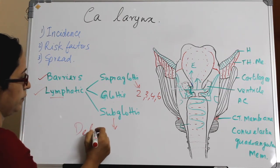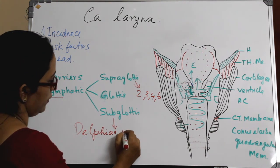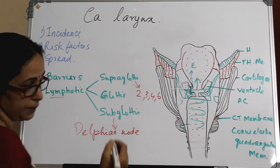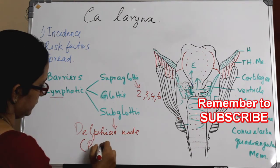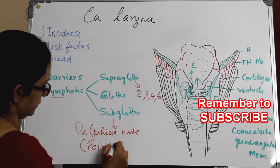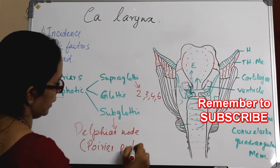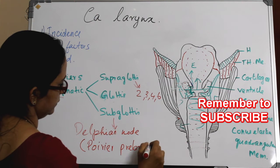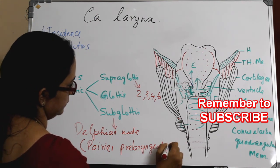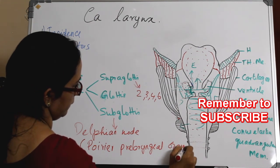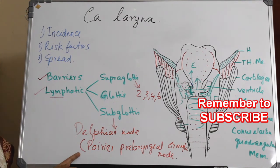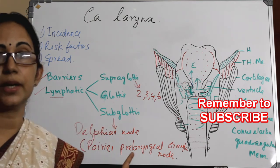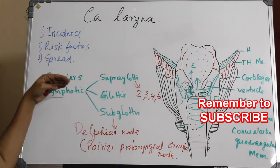The Delphian node is a midline anterior metastatic node, otherwise called the pre-laryngeal ganglionic node. It occurs significantly with subglottic extension.